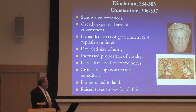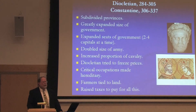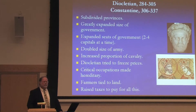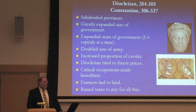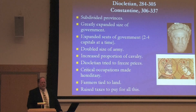They expanded the number of capitals, seats of government, so that rather than simply having Rome as a capital, now there were anywhere from two to four at a time. Constantine, of course, established Constantinople as a new capital in the east, now the city of Istanbul. Rome continued as a capital in the west, but there was also a capital city often at Trier, a capital at Milan, and later a capital at Ravenna. Every one of these capitals had to have a full complement of palaces and furniture and servants and so forth.